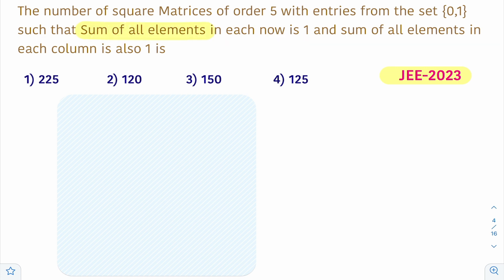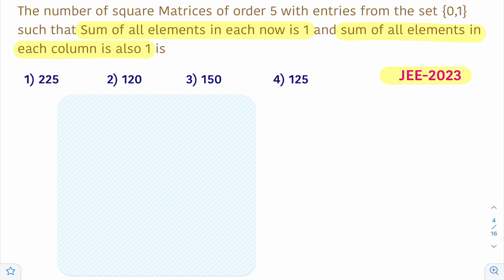This is important. The sum of all elements of each row is 1, and the sum of all elements in each column is also 1. That means we need to find how many such square matrices of order 5 are possible with these two conditions.